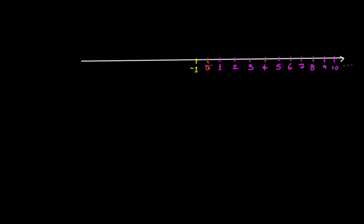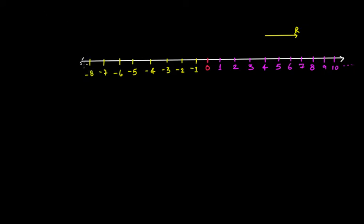I will write minus one to the left of zero. Now you might be thinking: where will minus two come? When writing positive numbers, we were moving towards the right and increasing - zero to one, one to two, two to three, three to four. We were moving in the right direction. But since minus one is here, where will minus two come? The answer is: start from minus one and keep writing all remaining numbers towards the left. So minus two here, minus three here, minus four, minus five, minus six, minus seven, minus eight, and this will continue.